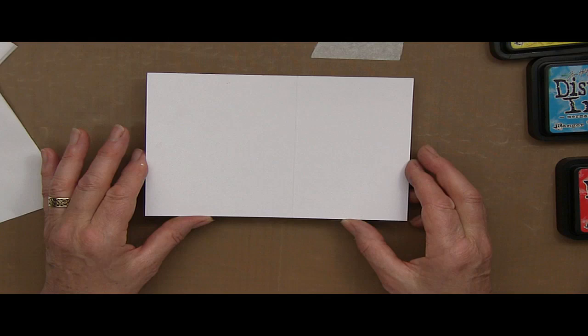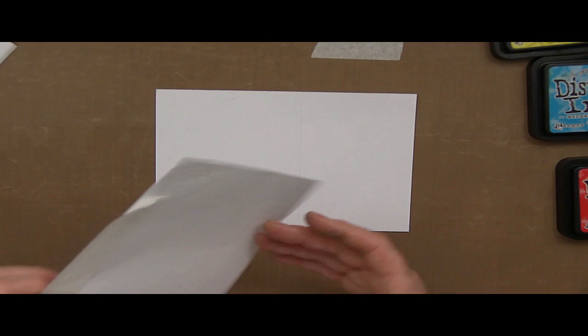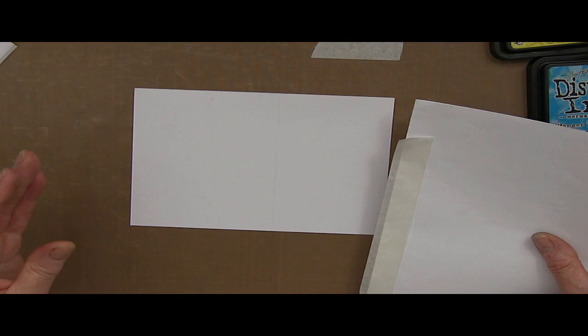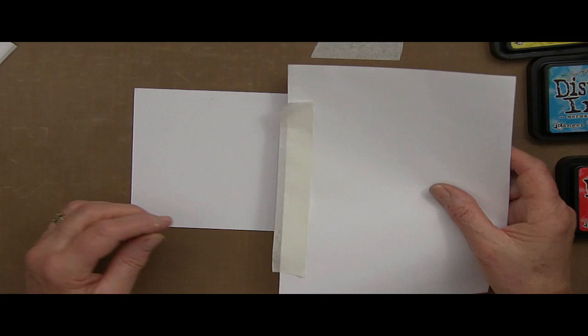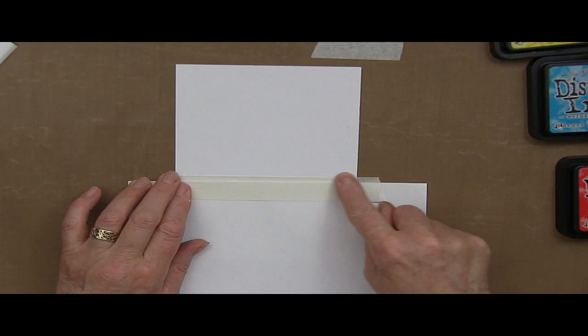I've scored a line using a scoreboard and a scoring tool 4 inches up from the bottom of the cardstock. Take a piece of copy paper because you really want to protect the bottom half of the card and keep it pristine white while you're using distress inks on the top part of the card.